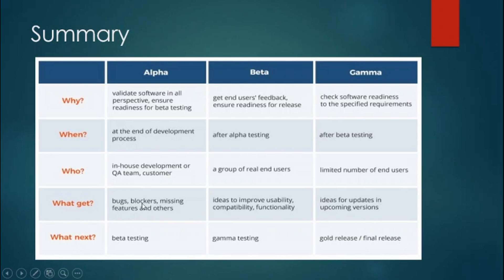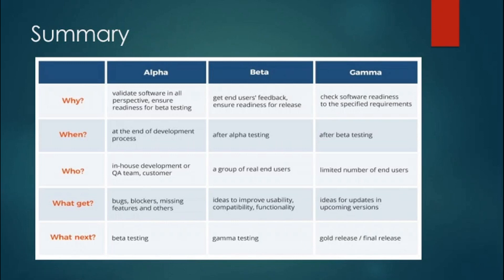Alpha testing reveals bugs, blockers, missing features, and functionality issues. Beta testing gives insight into usability, compatibility, and functionality — for instance, whether the app works correctly on specific versions of Android or iOS. Gamma testing provides ideas for updates in upcoming versions. After alpha comes beta, after beta comes gamma, and after gamma the product is finally released into the production environment.